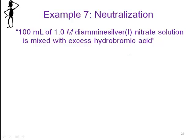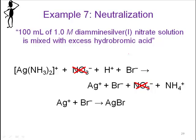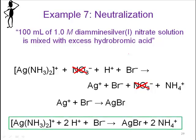If we add diamine silver nitrate mixed with excess hydrobromic acid, the NH3 and Br switch places. That forms silver bromide, which is a solid — a precipitate. That's how you get a precipitate forming in this ligand acid-base neutralization.